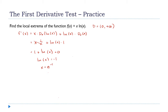I'm going to draw a number line and place e to the negative first on it. What is e to the negative first? Let's go to the calculator: 1 divided by 2.71828 is approximately 0.367. So on the right side I'll pick 1, which is always easy to work with.